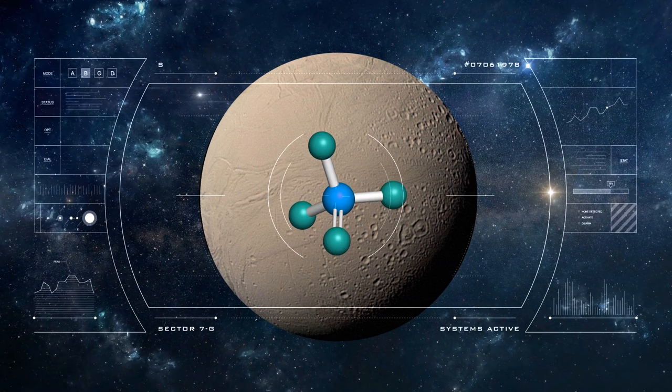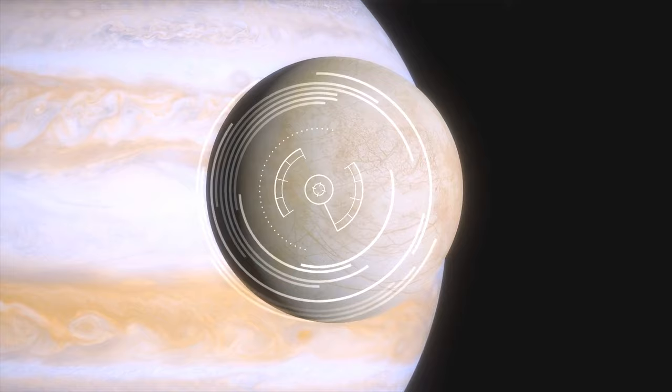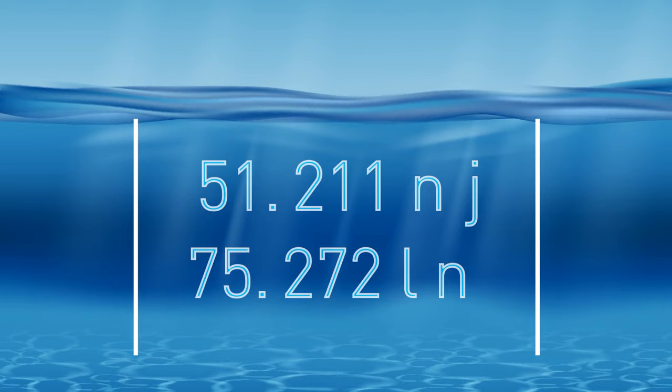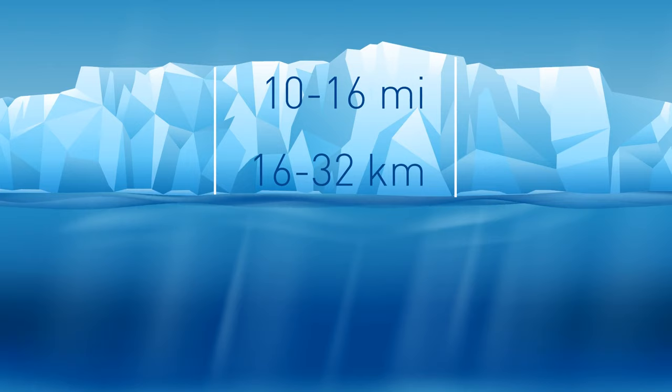Astronomers consider Europa one of the most promising places in the solar system to search for new life forms. All because this moon has a huge saltwater ocean with a depth of 40 to 100 miles. Yes, it is hidden under a layer of ice that is estimated to be from 10 to 20 miles thick. But it is still potentially habitable. Astronomers claim that plumes of water erupt from cracks in the ice shell and release the contents of the moon's ocean into space.